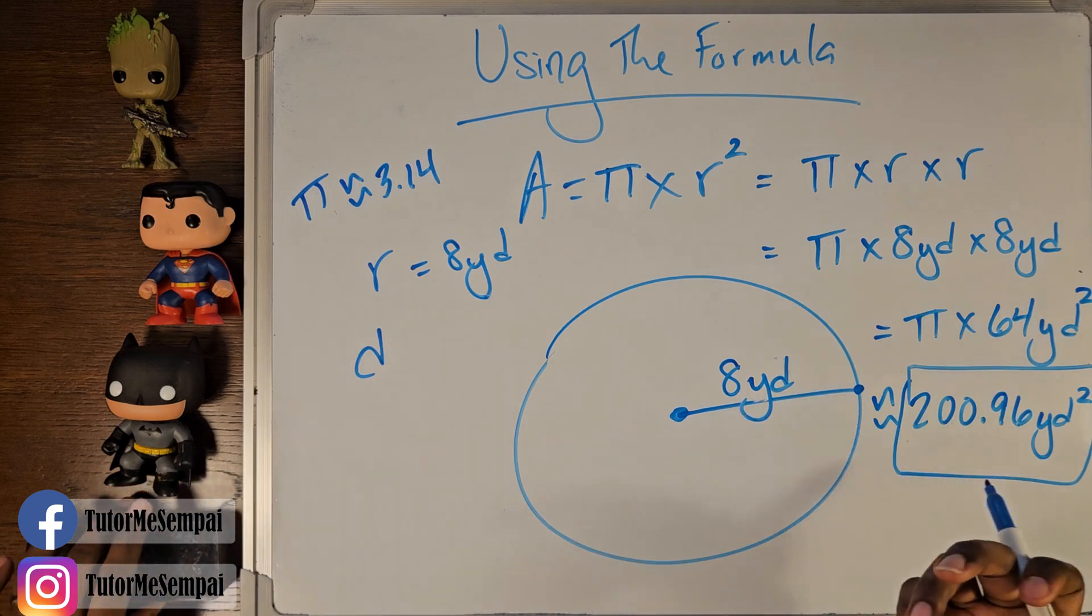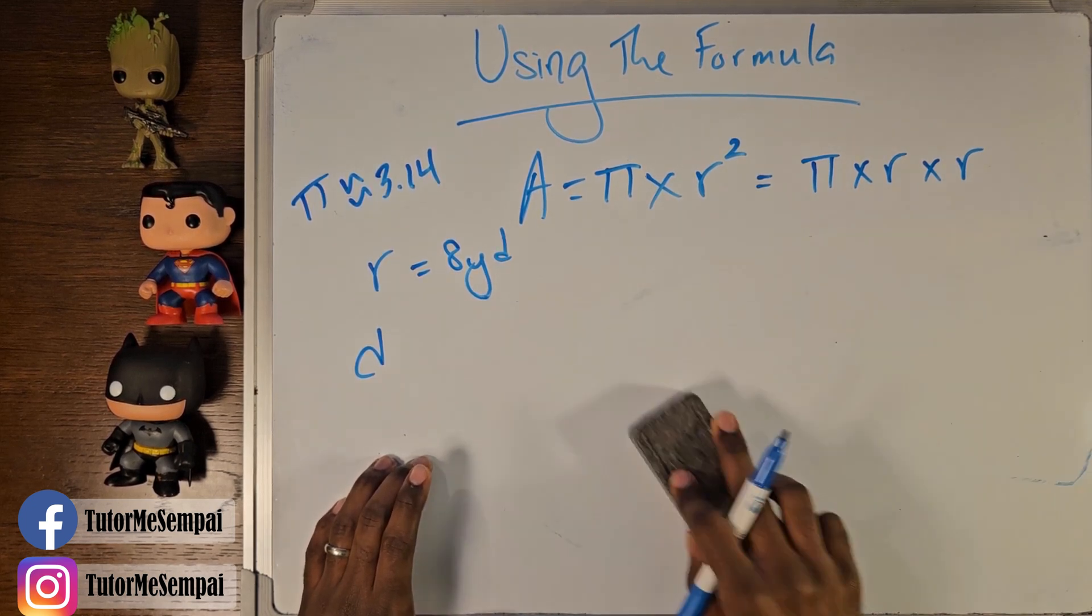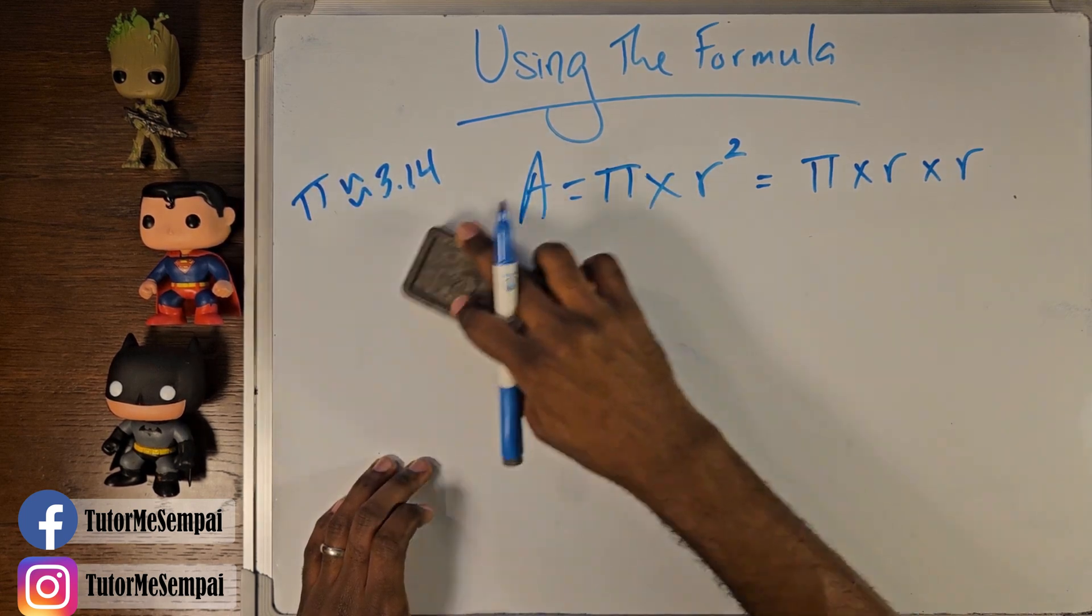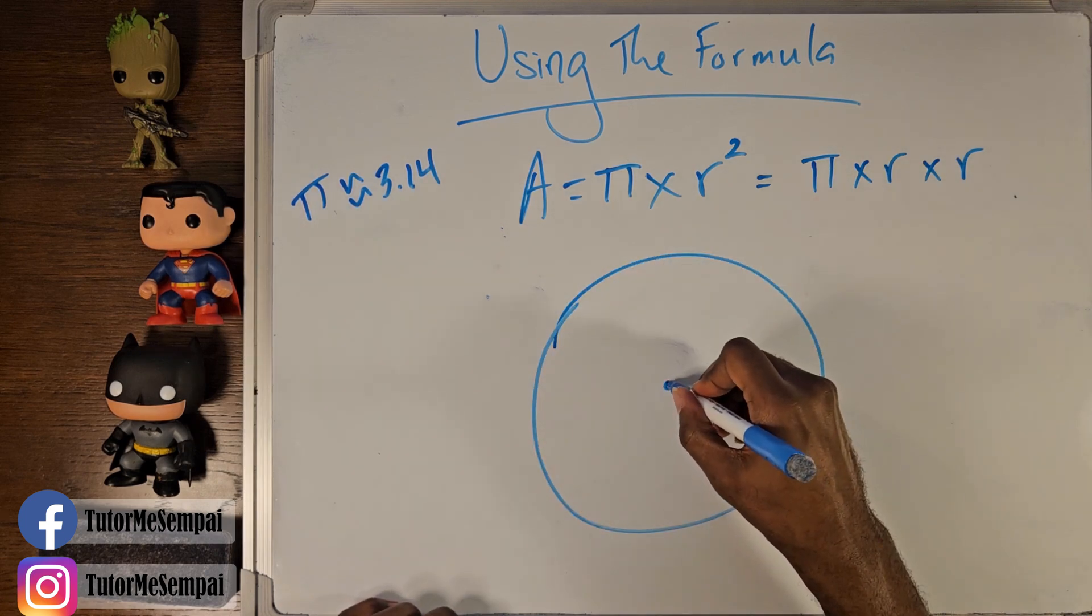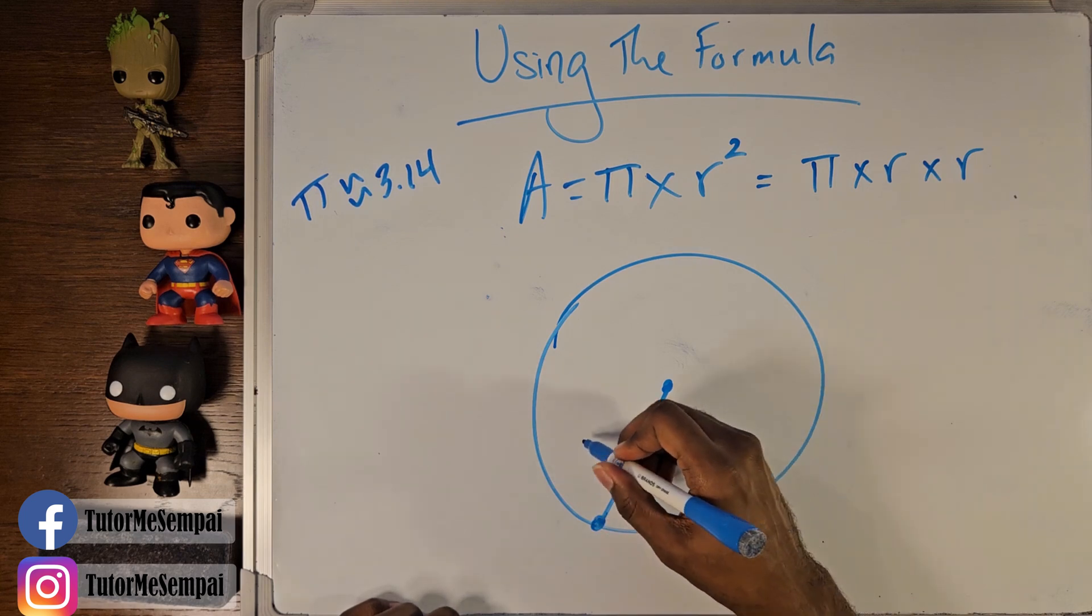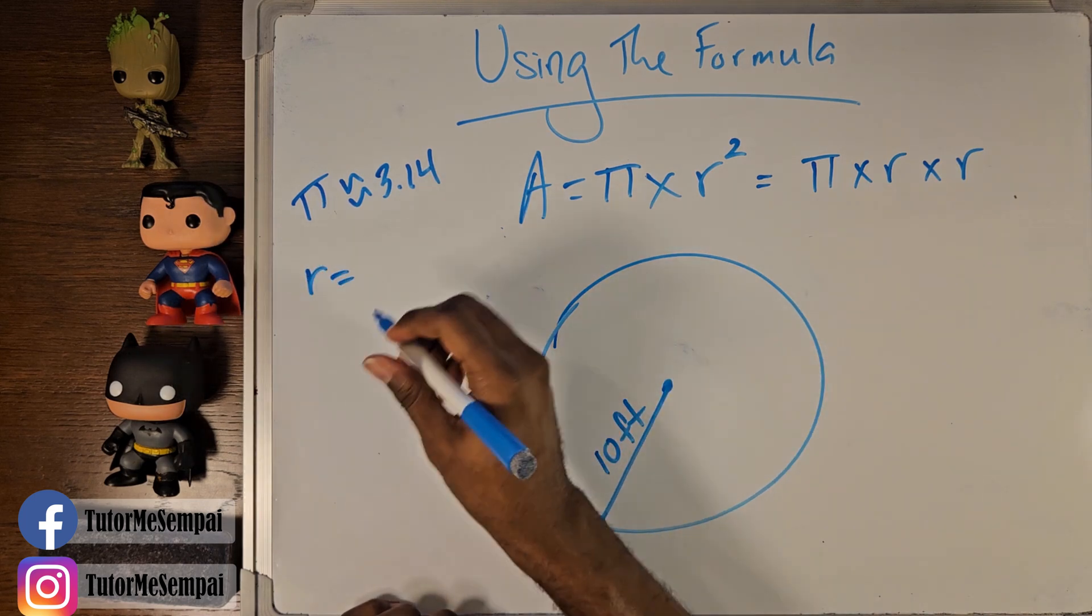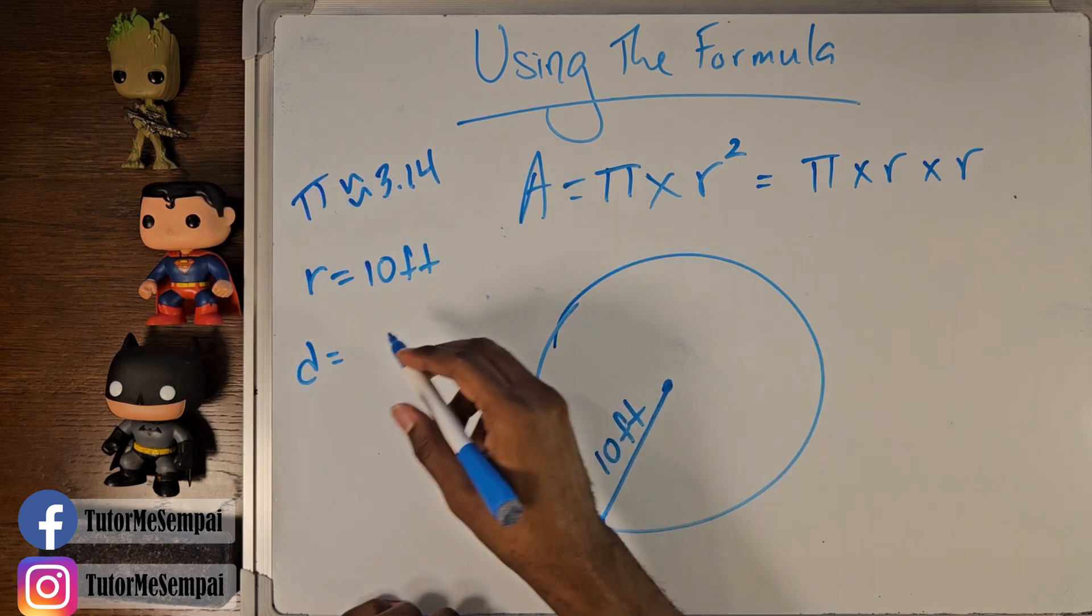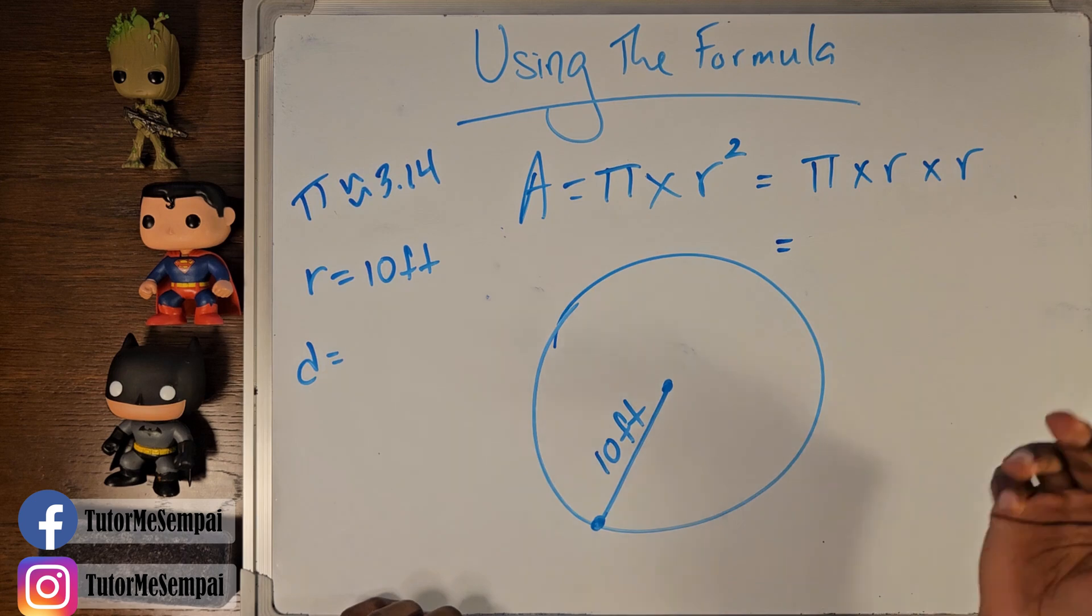So let's say we have a different radius. So we had eight yards for that one. Let's say our radius looks a little bit different. What would we do? Well, let's say we have a circle and the radius is going to be over here this time. And the radius is, let's say 10 feet. So we have our r is going to be 10 feet. We still don't know what our diameter is for this, but that's not necessary because we have what we need. We can plug everything in again.